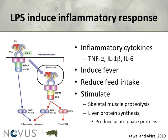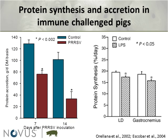Some work has also been done on acute phase proteins. From a historic perspective, when animals are challenged and we look at protein accretion potential seven or fourteen days after inoculation, we see a significant and drastic reduction. There are differences in feed intake, but even correcting for feed intake as a covariate, you still end up with a significant reduction in protein accretion — meaning reduced feed intake does not entirely explain the reduction in protein synthesis.